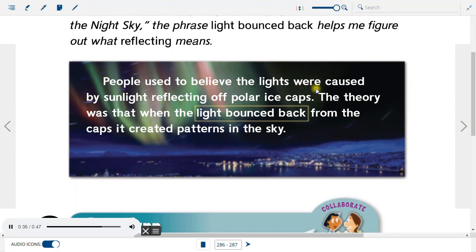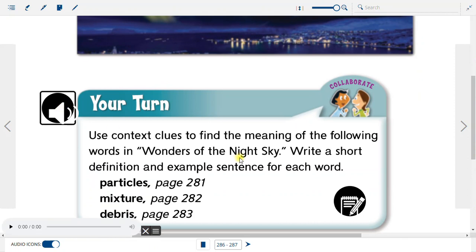The theory was that when the light bounced back from the caps, it created patterns in the sky. Your turn. Use context clues to find the meaning of the following words in Wonders of the Night Sky. Write a short definition and example sentence for each word: Particles, page 281; Mixture, page 282; Debris, page 283.